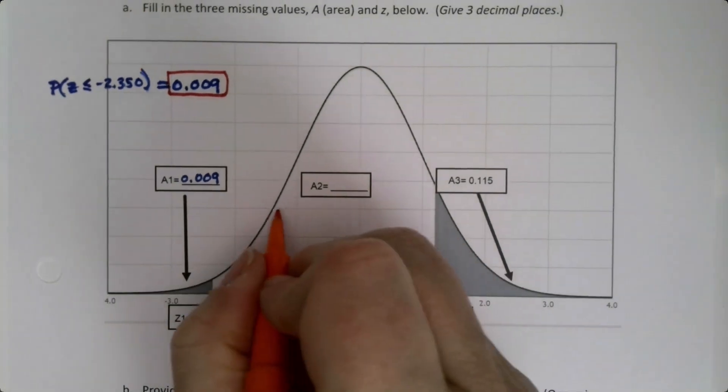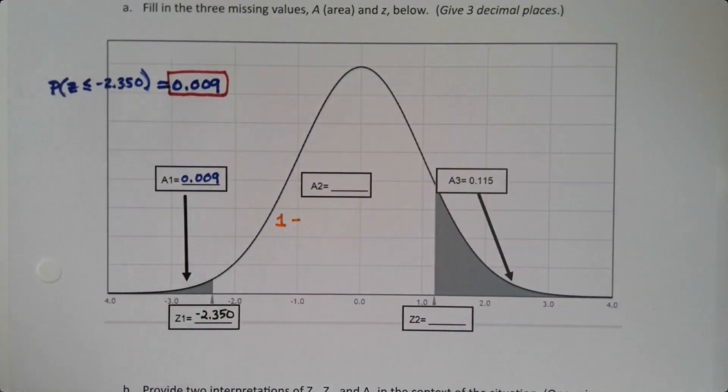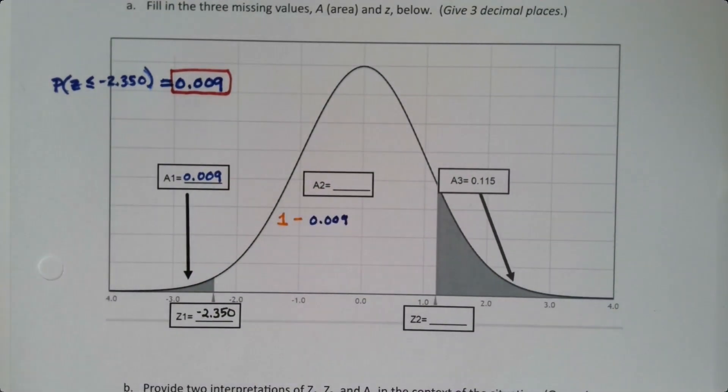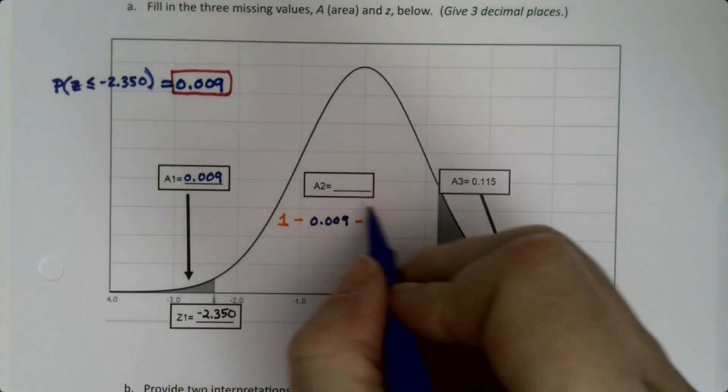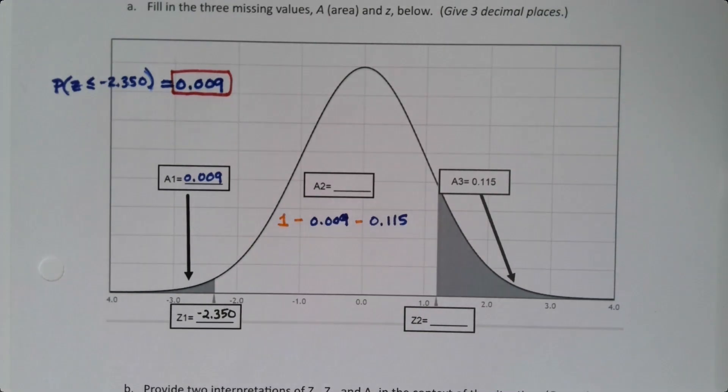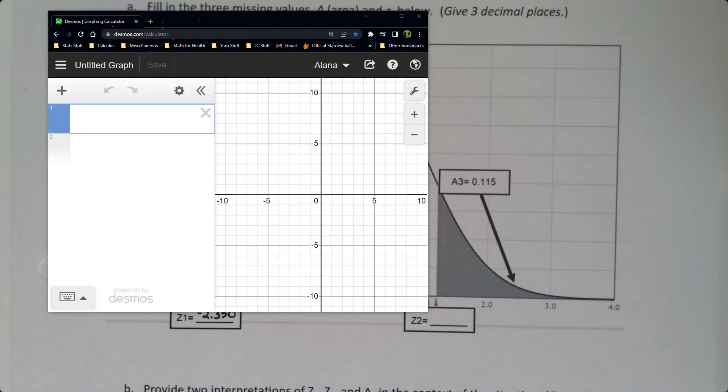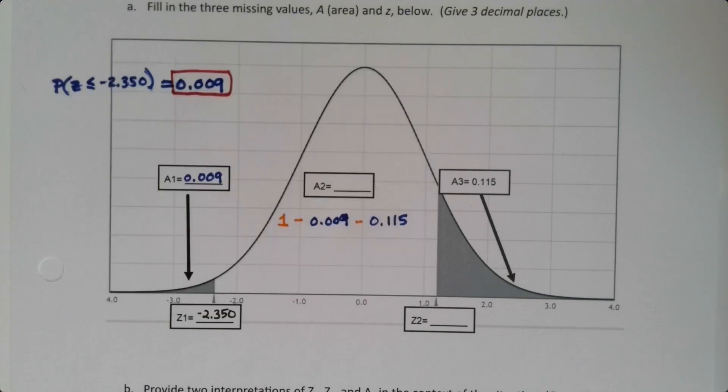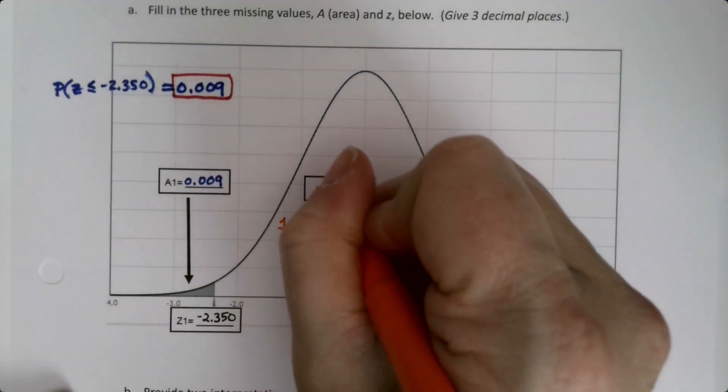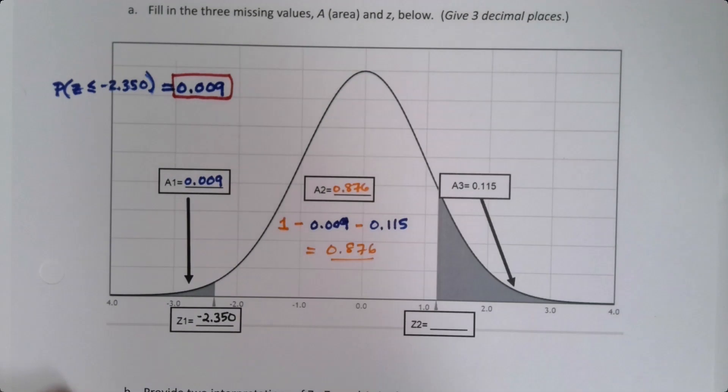So this area, I'm just going to put the work right here. It's 1 take away 0.009, the thing I just found, take away another 0.115. And that's a decimals problem. So here's decimals. If I just take 1 take away 0.009 take away 0.115, I'll get 0.876. So 0.876 is the center. And there we go, so there's that one.